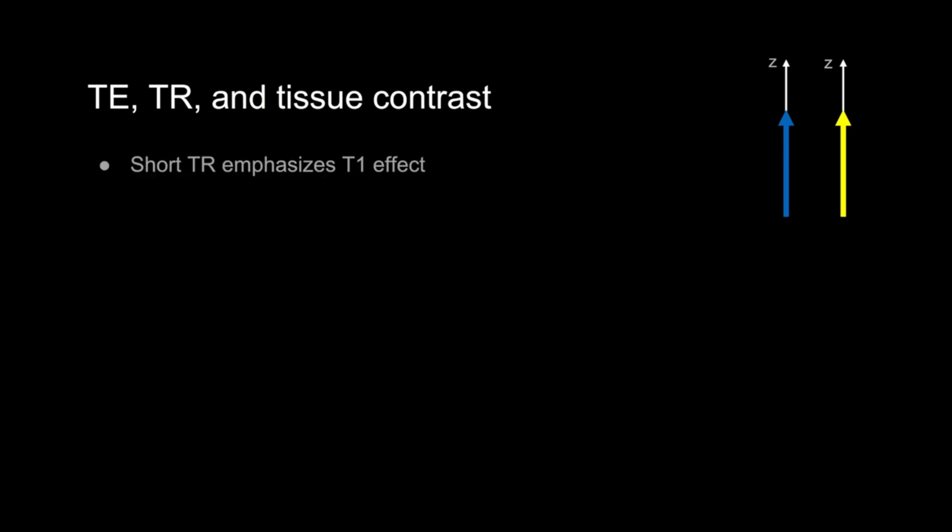The takeaway is that spin echo sequences use this refocusing or rephasing pulse to reduce magnetic field inhomogeneities, and you can recognize a spin echo by having two RF pulses — usually a 90 and 180-degree pulse — at the start. Remember, the type of contrast is mainly determined by TE and TR. Short TRs will emphasize T1 effect, and longer TEs will emphasize T2 effect.